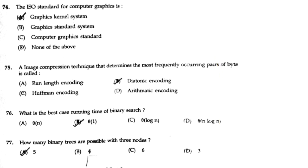An image compression technique that determines the most frequently occurring pairs of bytes is called diatomic encoding.